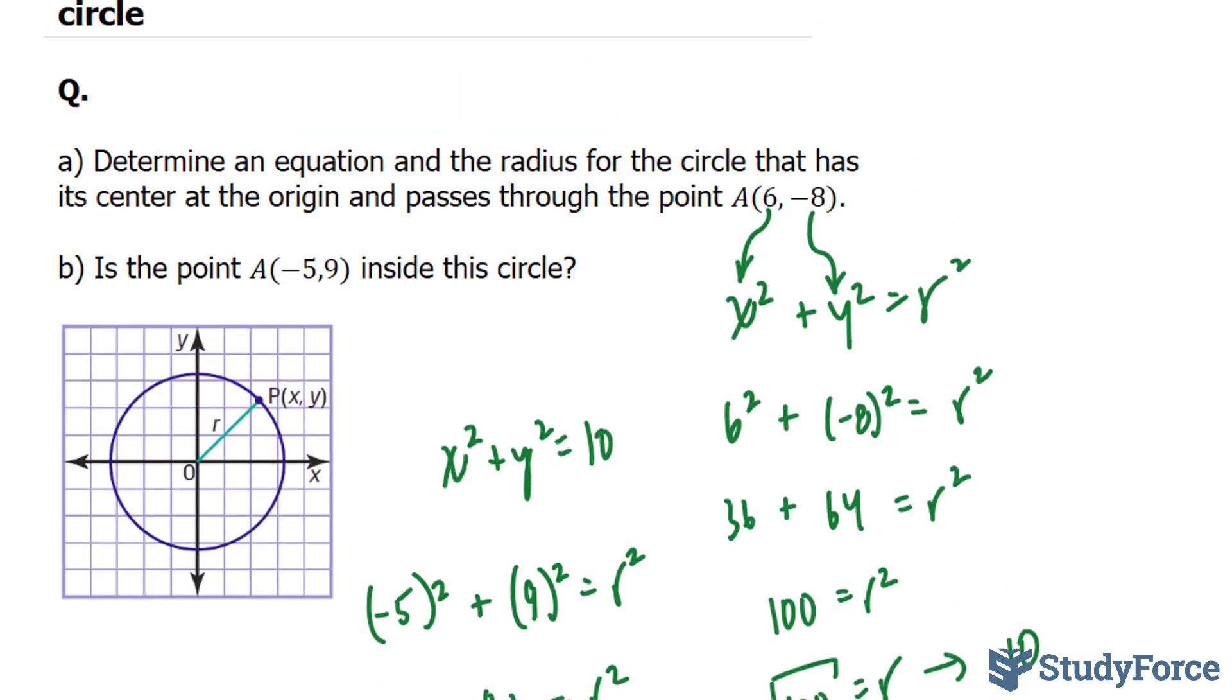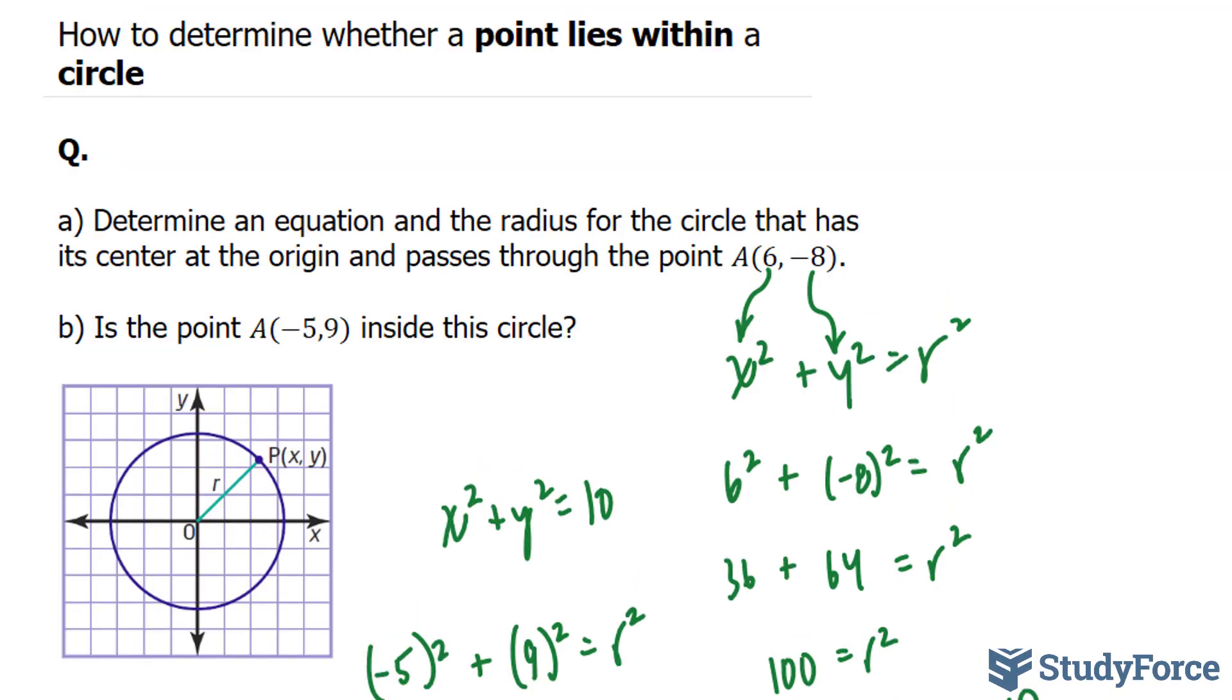that means that this point, negative 5 and 9, does not lie inside the circle, but outside. And there you have it. That is how to determine whether a point lies within a circle.